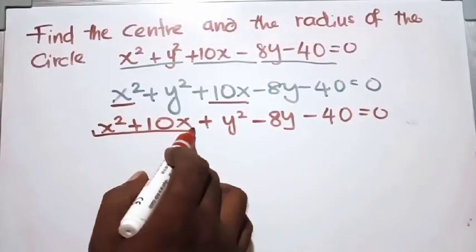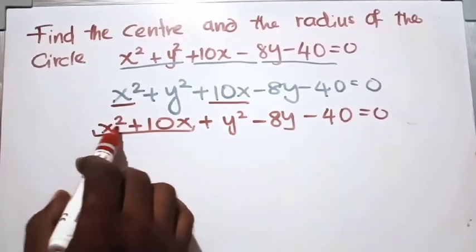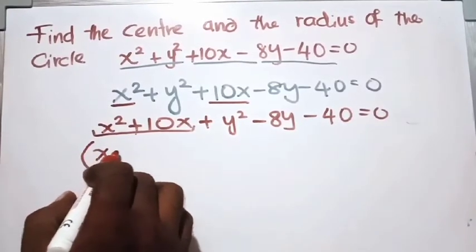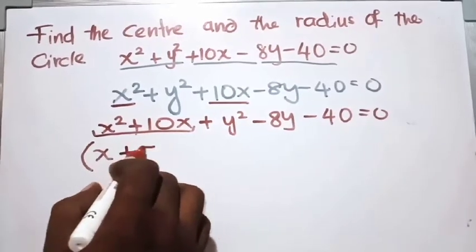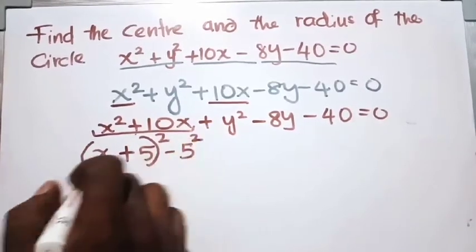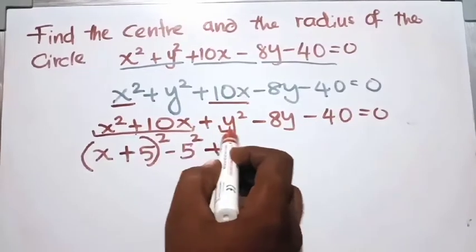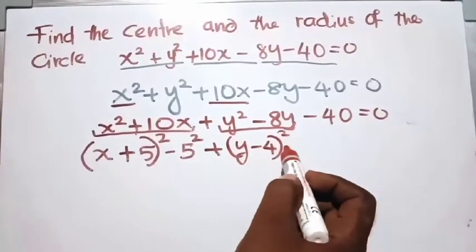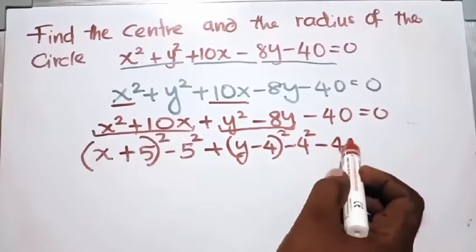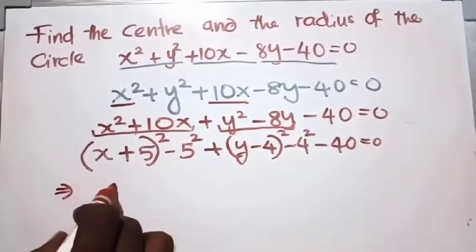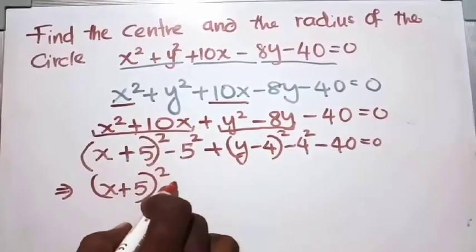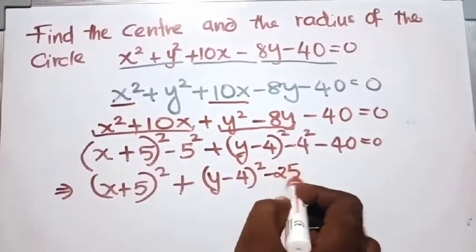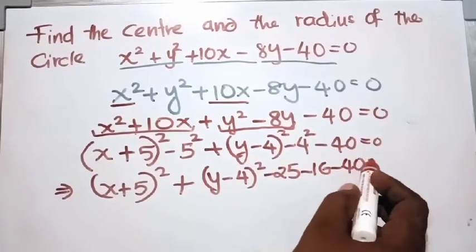Now, consider these terms using completing the square. We get (x plus 5) squared minus 5 squared for the x terms. Similarly for the y terms we get (y minus 4) squared minus 4 squared. So the equation becomes (x plus 5) squared plus (y minus 4) squared minus 25 minus 16 minus 40 equals 0.